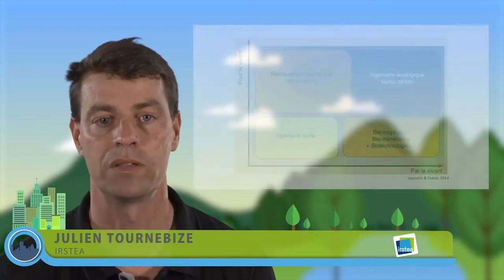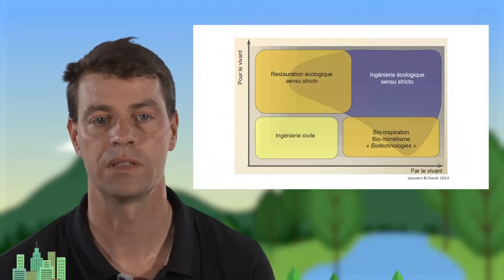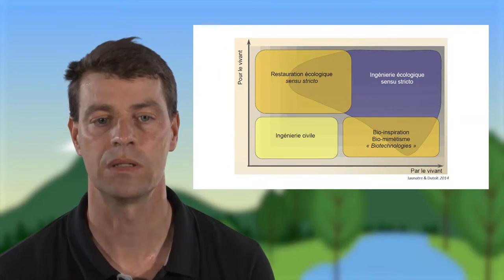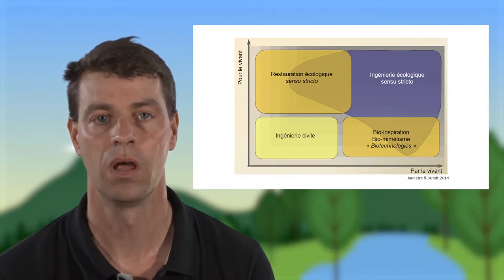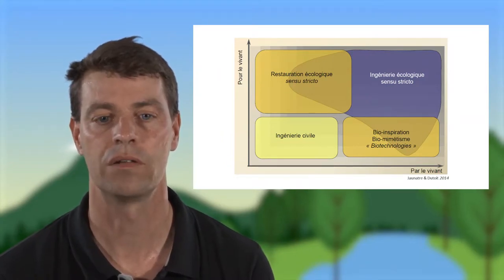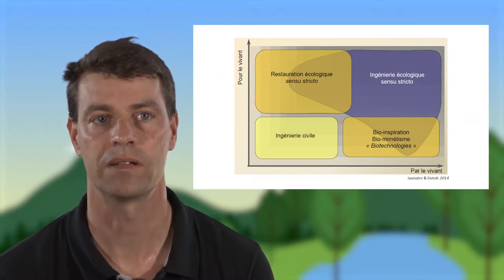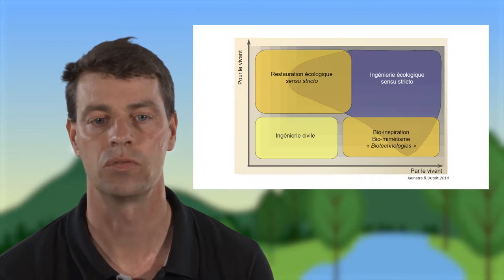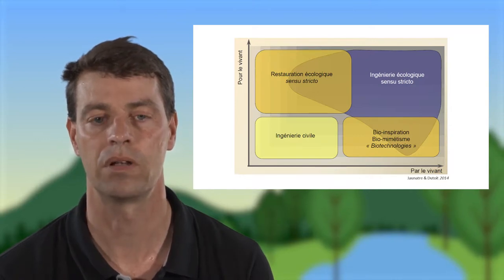La dépollution à l'interface rurale-urbain : nous allons voir comment l'ingénierie écologique peut rendre des services au niveau de la qualité de l'eau en milieu rural. Nous nous basons sur les services écosystémiques de régulation des flux afin de restaurer les fonctionnalités des bassins versants, fonctionnalités qui vont être privilégiées par cet exposé.